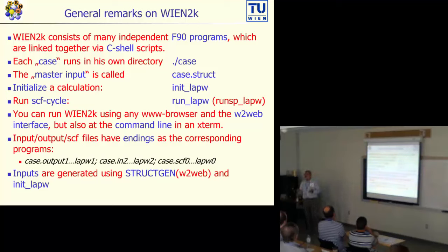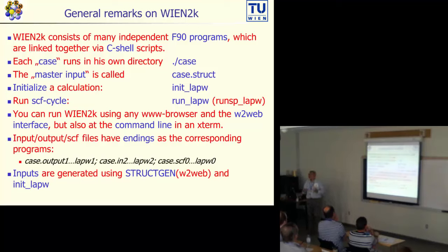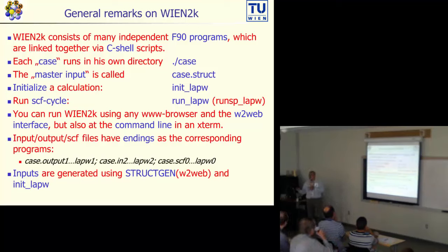I will always talk about the 'case' — every compound we are doing is a case, and every compound should run in its own subdirectory, which I will call the case directory. We need a file containing the structural information about the compound you want to calculate. This is our master input and this file is called case.struct. I will often refer to it as 'the struct file' — and in reality 'case' will be replaced by titaniumnitride.struct, magnesiumoxide.struct, or whatever compound you are doing.